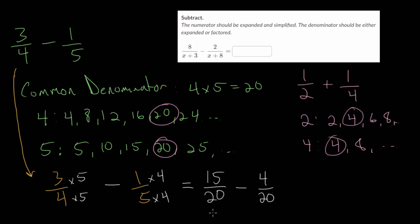So 15 minus 4 is just 11. Or in other words, you have 15 of these 20ths, and you're taking away 4 of these 20ths. And so in total, you would have 11 of those 20ths left. And so that would be your final answer, and it would be fully simplified, since we use the least common multiple as our denominator.